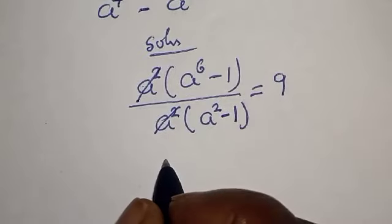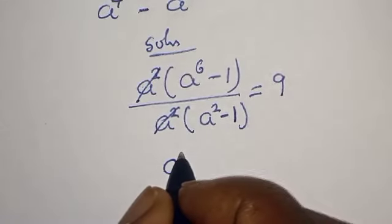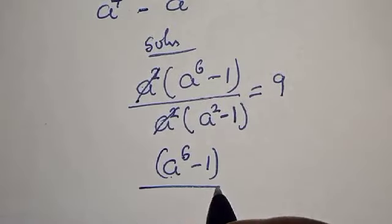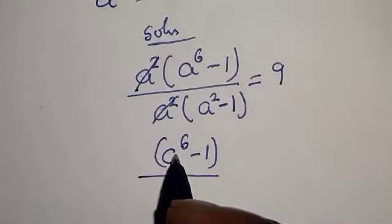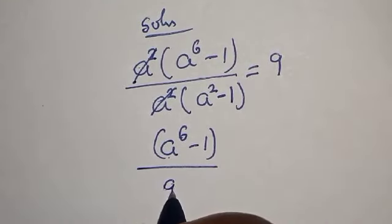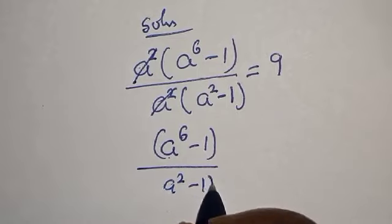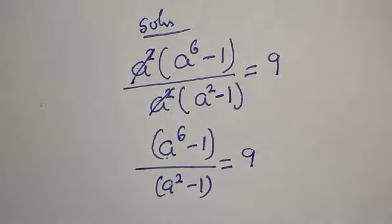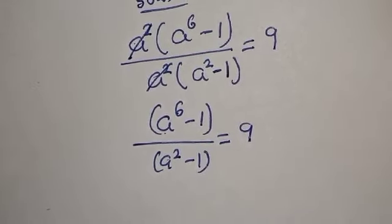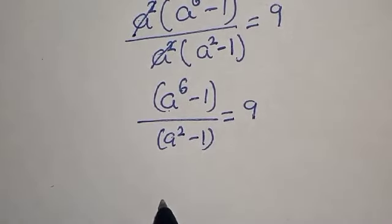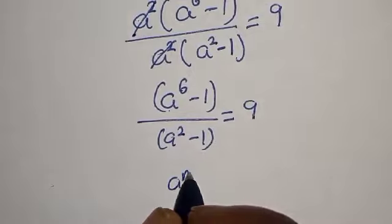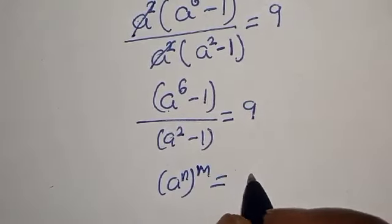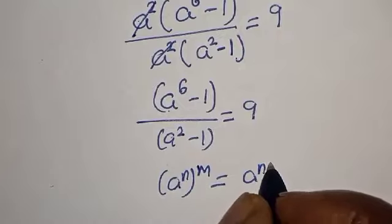The a squared terms cancel, so we have a raised to power 6 minus 1, divided by a squared minus 1, is equal to 9. Remember this rule: if you have a raised to power n, to the power of m, this is equal to a raised to power n times m.